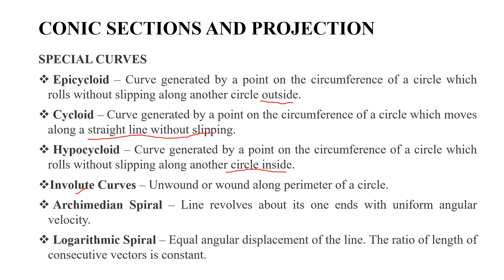An involute is the curve traced by unwinding a thread bound along the perimeter of a circle — the involute of a circle. The Archimedean spiral is a curve where a line revolves about its own end with uniform angular velocity. In a logarithmic spiral, the ratio of the lengths of consecutive radius vectors is constant.